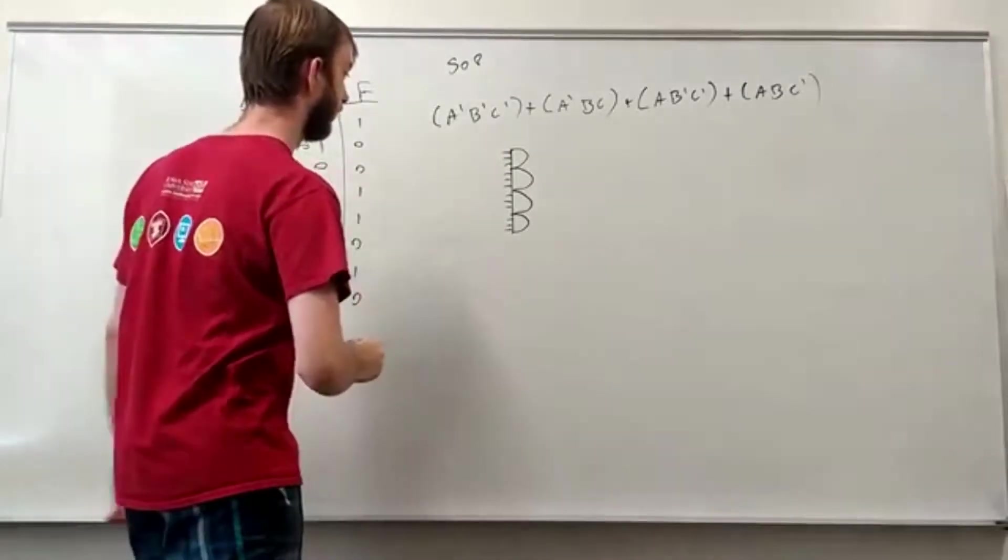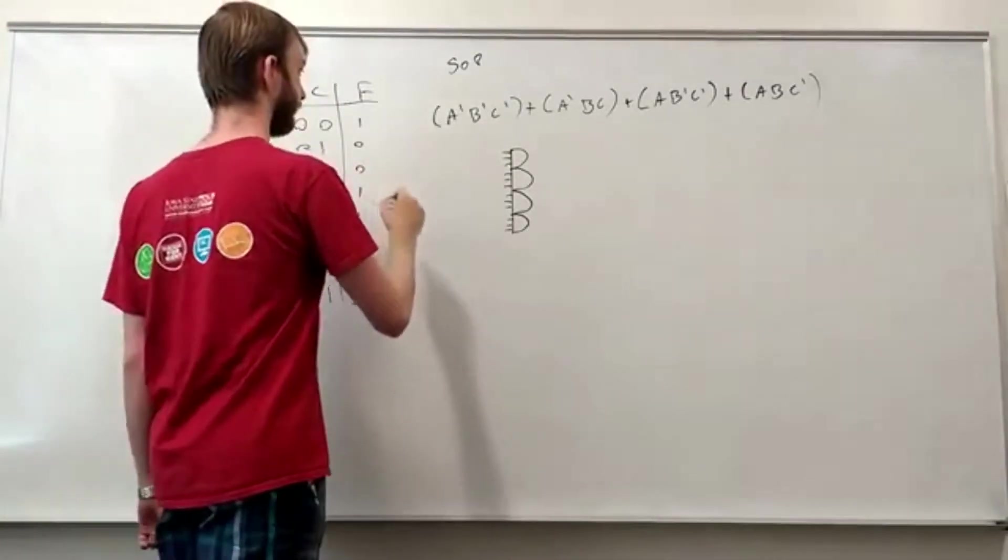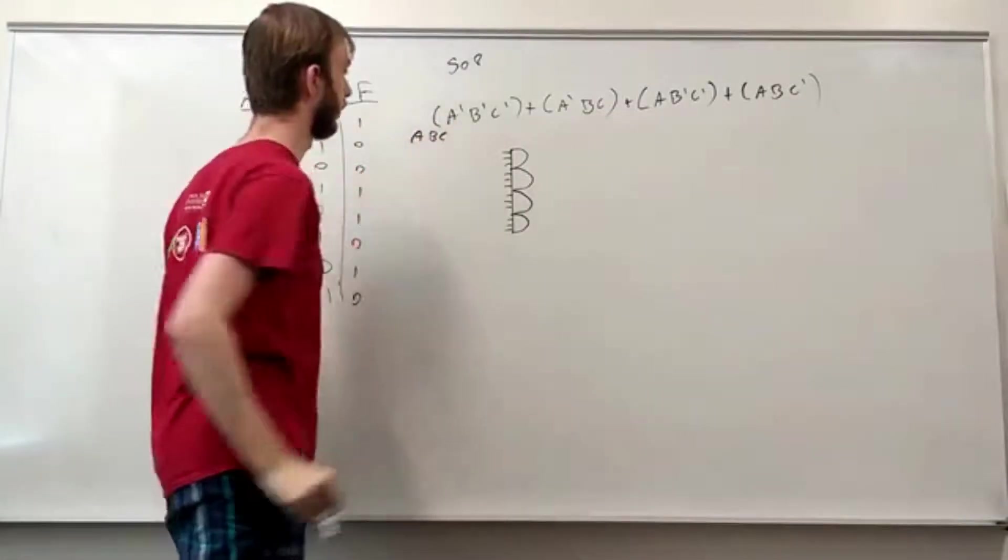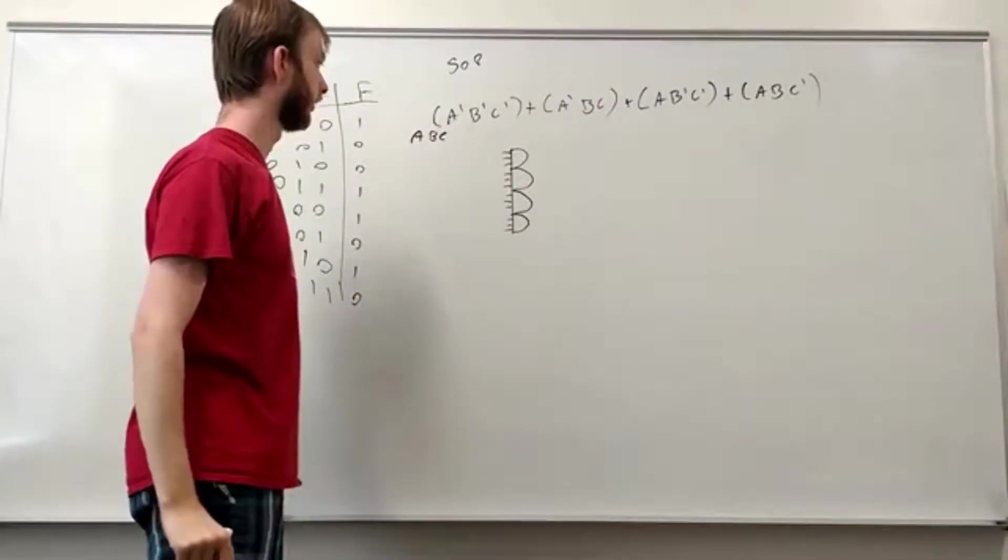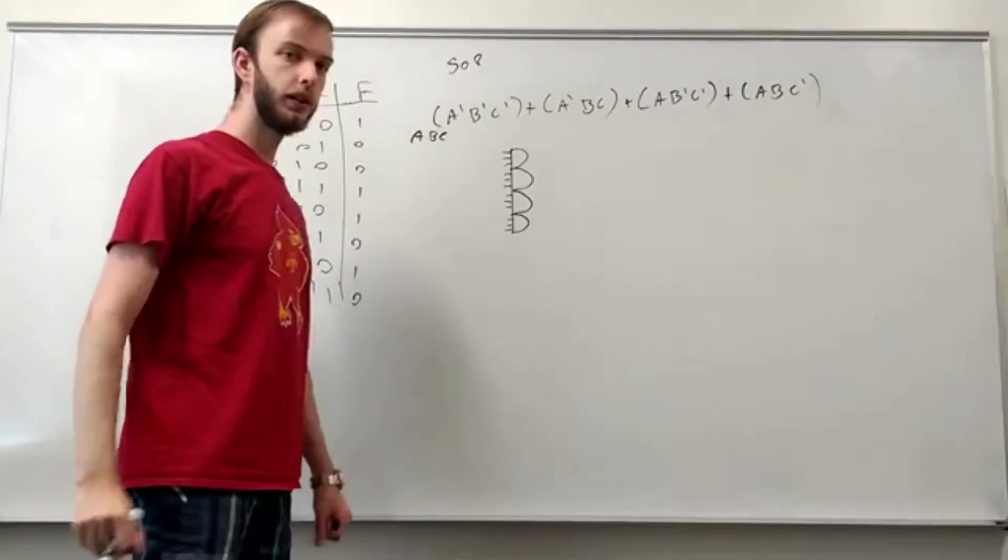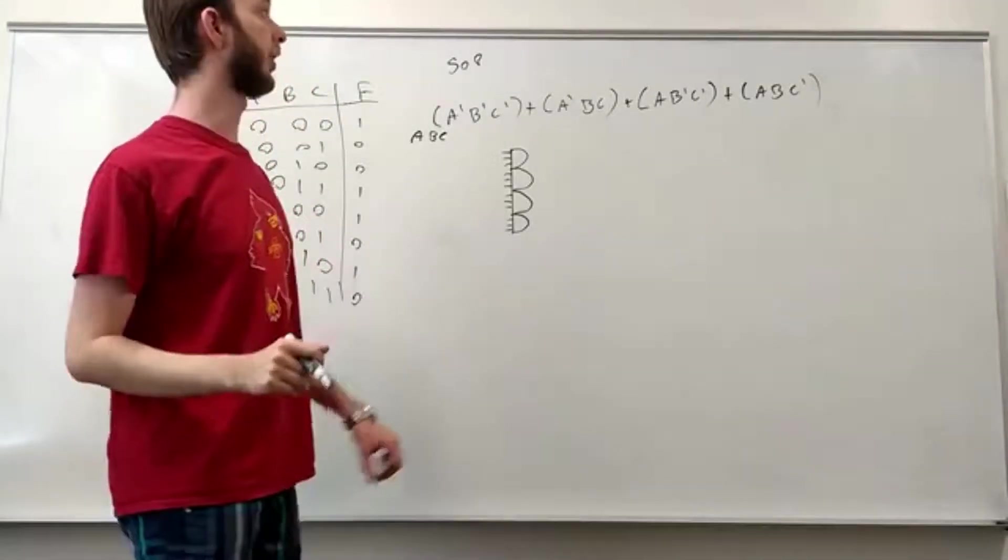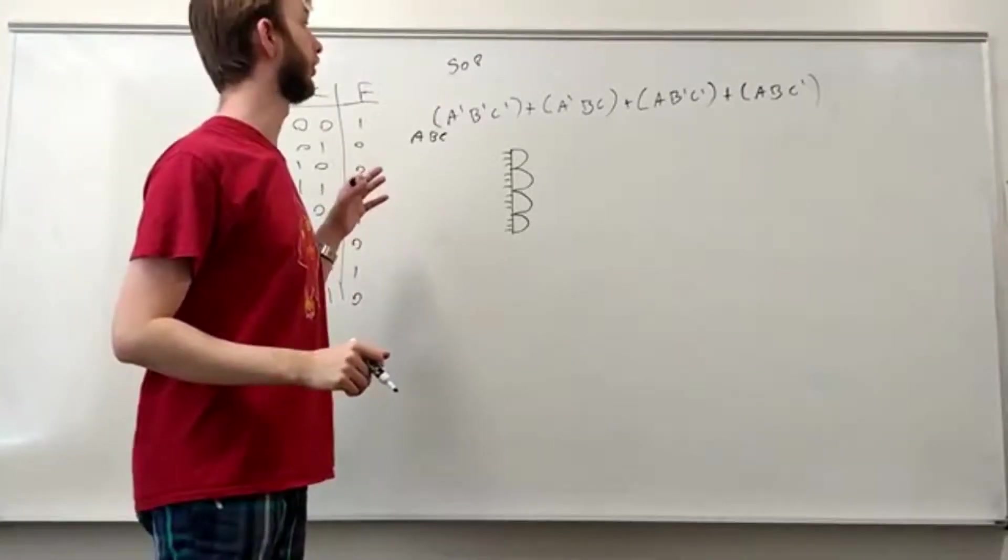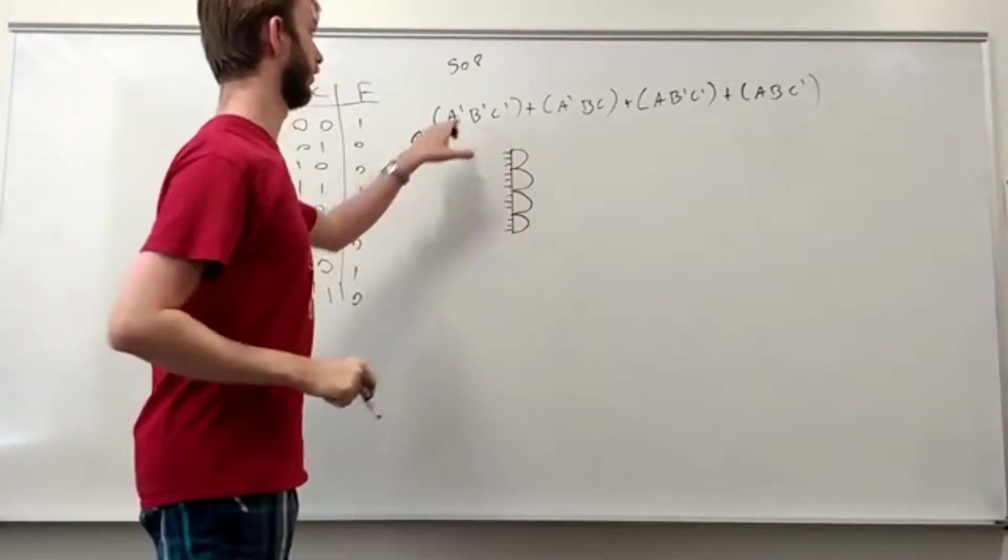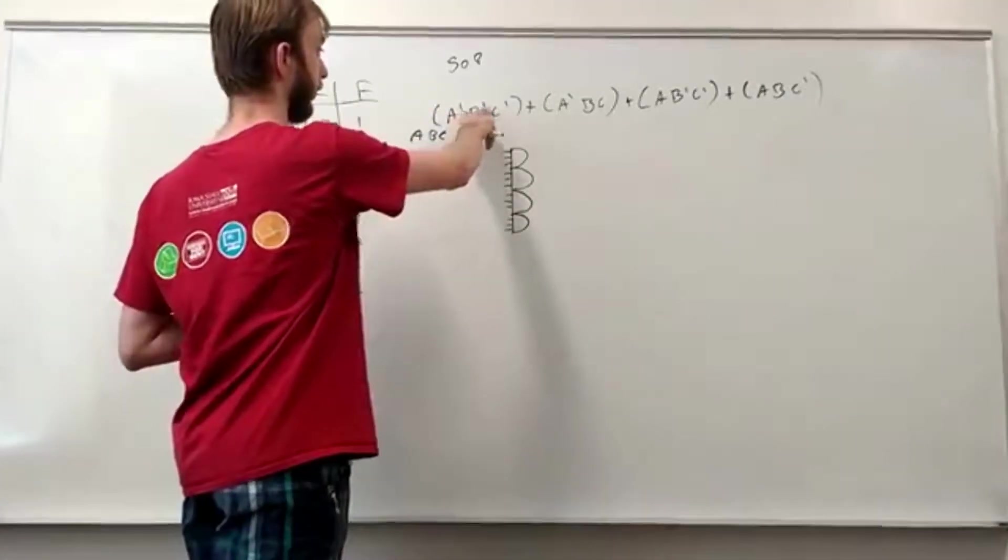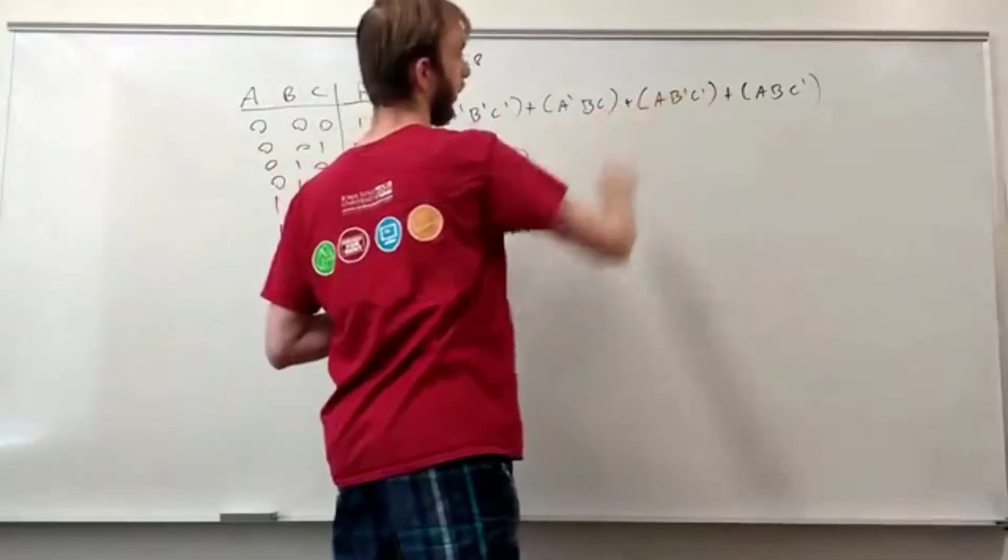Okay, and then let's create our A, B, and C up here. Now, the way we're going to do this is we're going to minimize our use of inverters. So, in this expression, we have one, two, three, four, five, six, seven inverters.